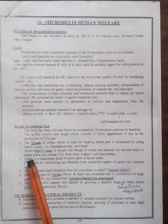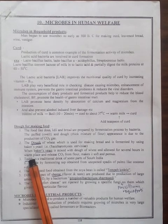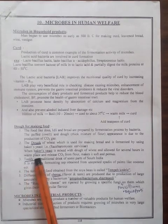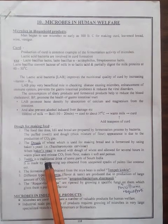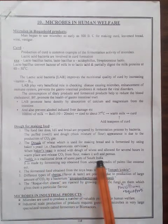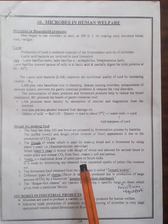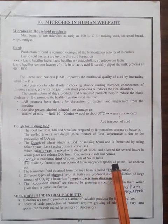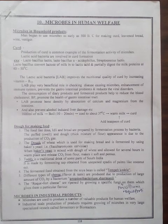Another product is toddy, also known as kallu. Toddy is a traditional drink used in South Indian communities. It is a product of fermentation of sap obtained from unopened spadices of palms like coconut trees.